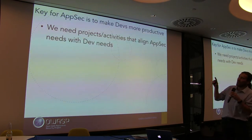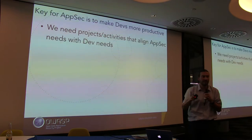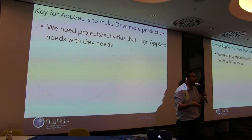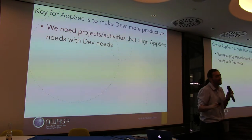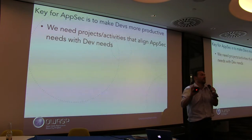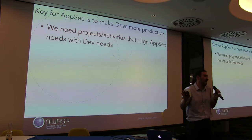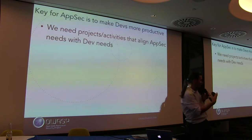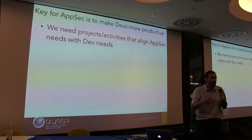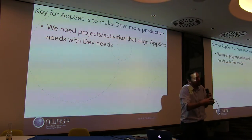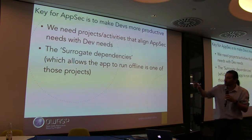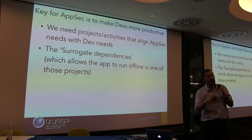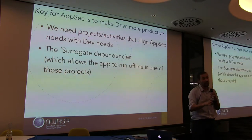I view that for AppSec to work, we have to make devs more productive. The surrogate dependencies, which allow things to go offline, is one of these projects. I thought Docker and containers was one of those, but there are too many moving parts — I started with approaches like 'let's Dockerize the whole thing' and I freaked out too many developers. So now I'm saying: maybe you should look at Docker and containers — let's talk about it. But that's a big change requiring a lot of moving parts.